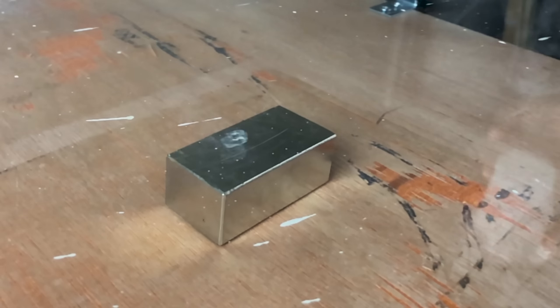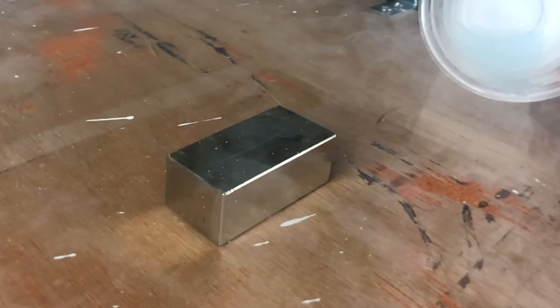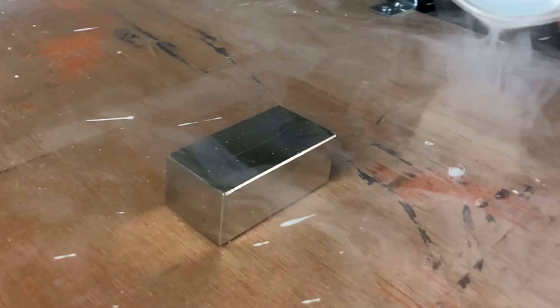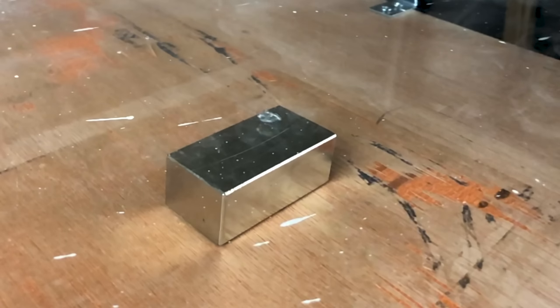You have the liquid oxygen droplets floating on this cloud of gaseous oxygen attracted to the magnet. And as it moves towards it, it's attracted more and more until eventually it gets pulled towards the center of the magnet.